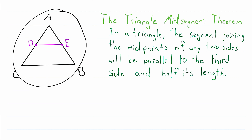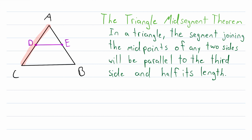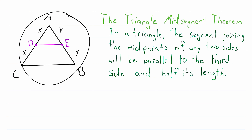Firstly, there is some information missing in our diagram. Remember that D is the midpoint of AC, so we know that segment AD is congruent to segment CD. So let's say AD has a length of X, thus CD also has a length of X. Similarly, since E is the midpoint of AB, AE is congruent to BE. We'll say this has a length of Y, thus BE also has a length of Y. This information is given to us because these are midpoints.